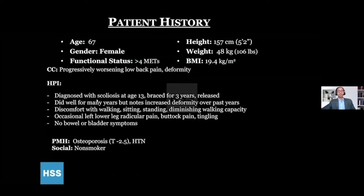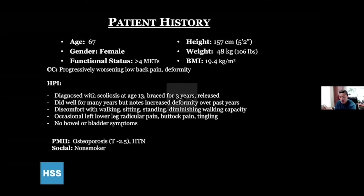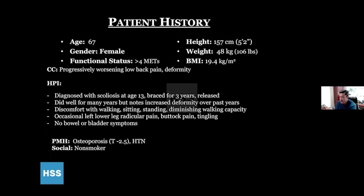I'm going to start out with a case to talk about how I'm incorporating some age-adjusted alignment. I want to thank Nick Clark, one of our all-star fellows, who put this case together. Basically, it's a 67-year-old who presented with scoliosis ever since the age of 13. It's progressively been worsening. She also had some intermittent left lower extremity symptoms with leg pain without any significant neurologic deficits.